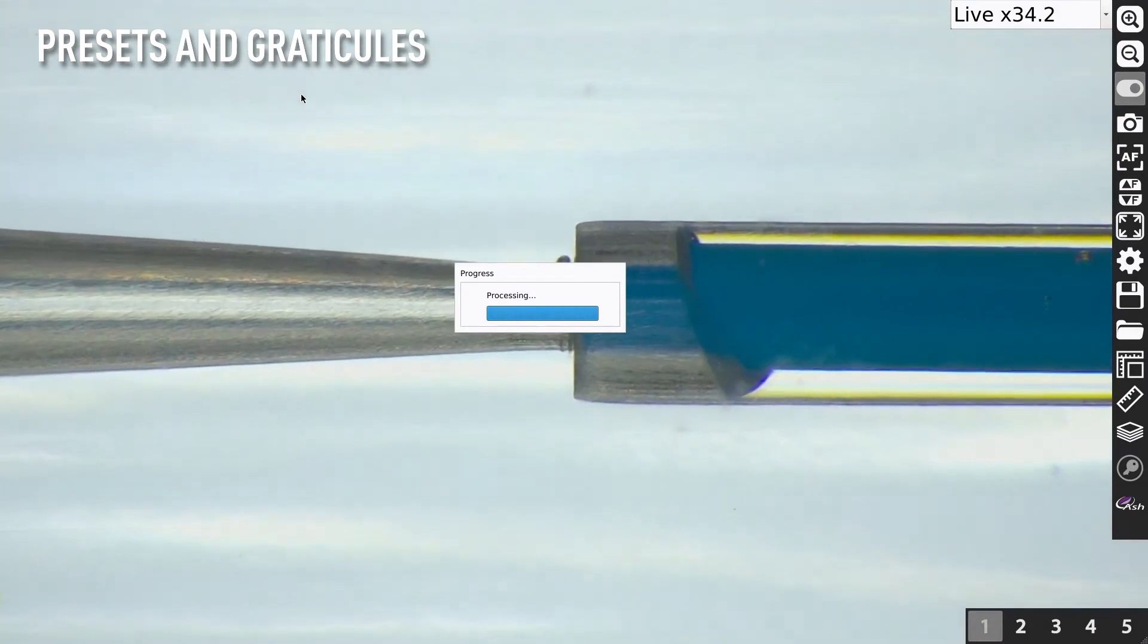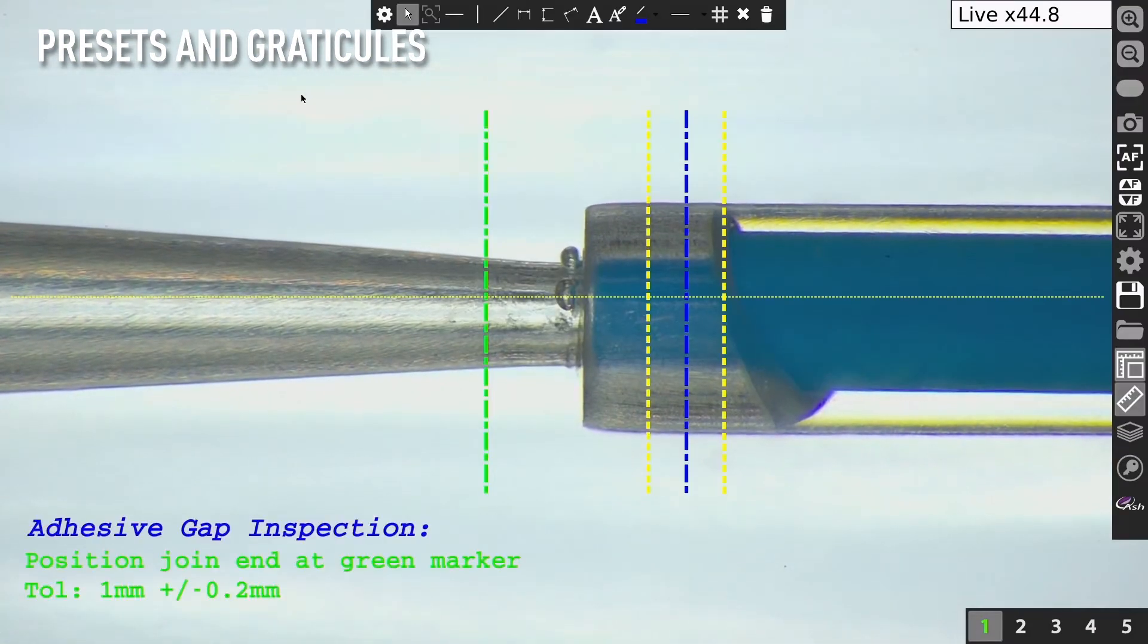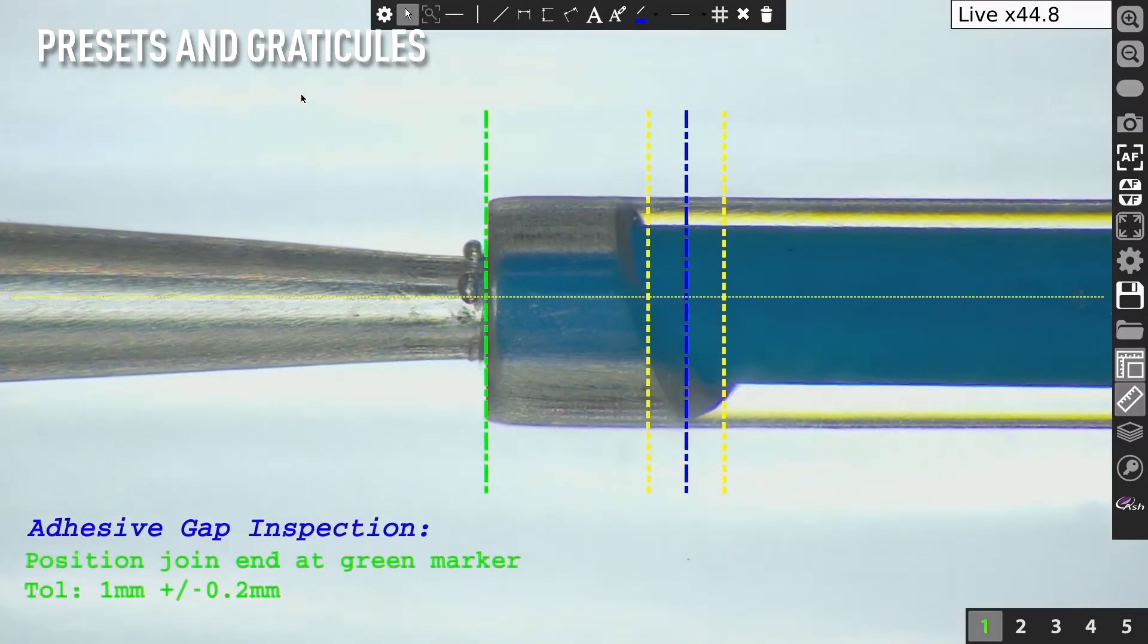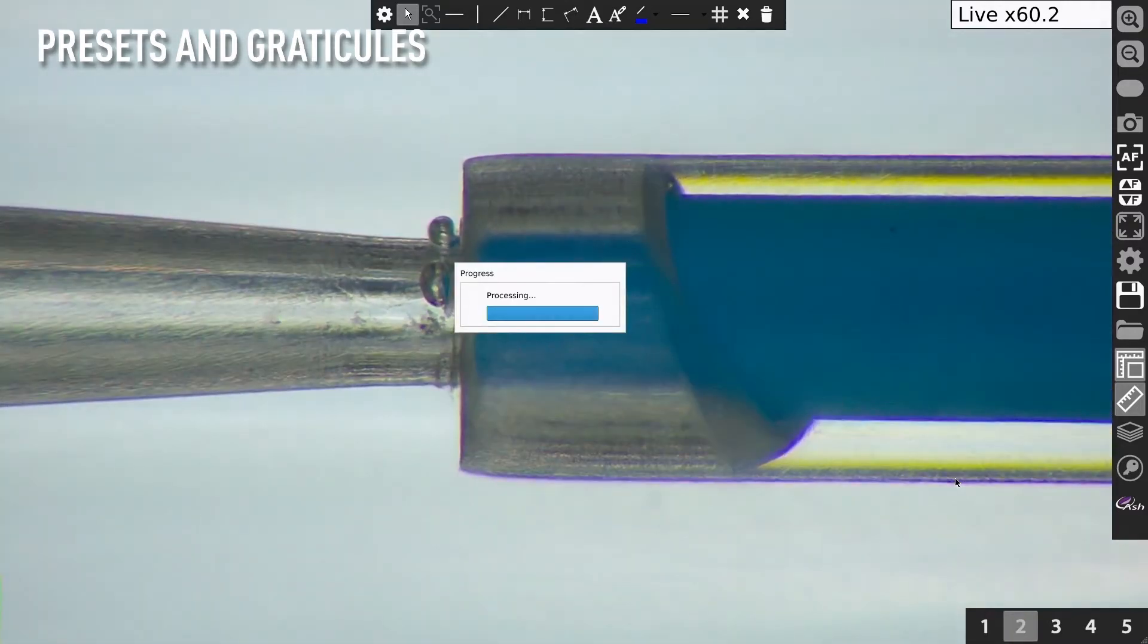On-screen preset buttons allow quick access to pre-configured, part-specific system settings. On-screen overlays enable the go, no-go rapid inspection of samples.